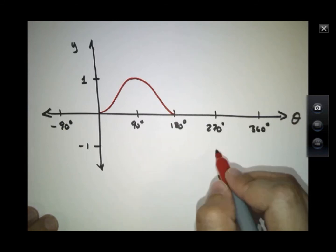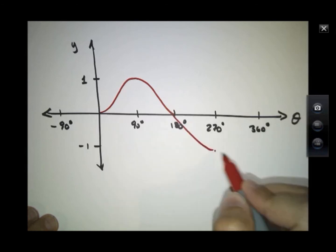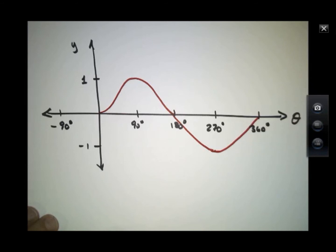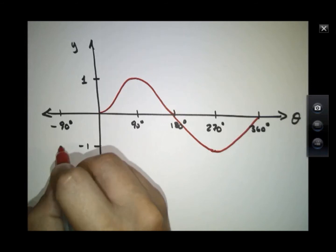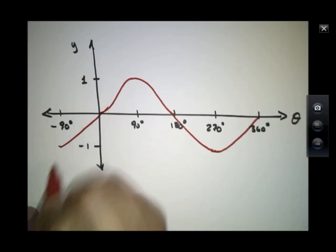At 270 degrees it actually goes to negative one because the opposite side is pointing straight down. And at 360 degrees it's back up to zero again. At minus 90 degrees I'm down here at minus one.